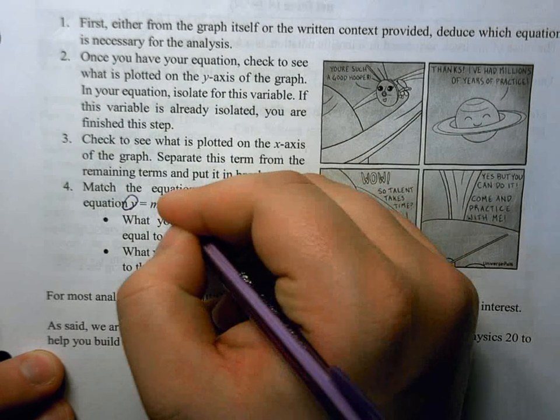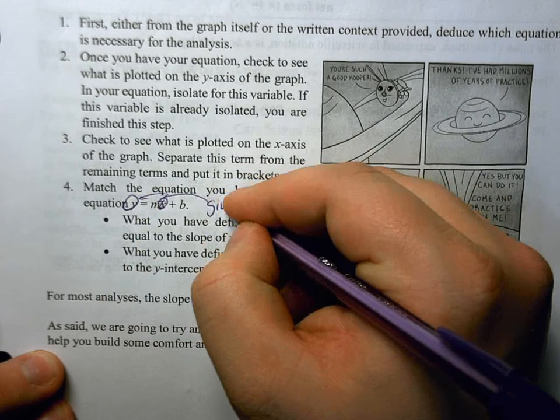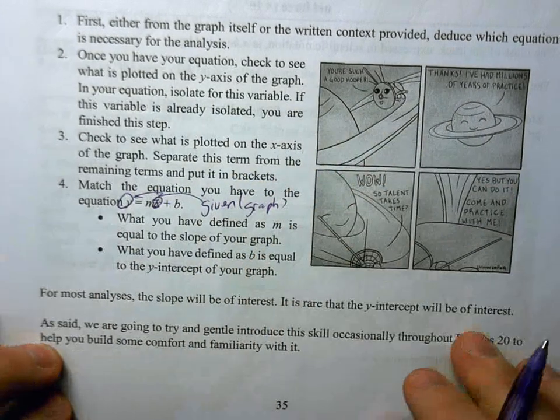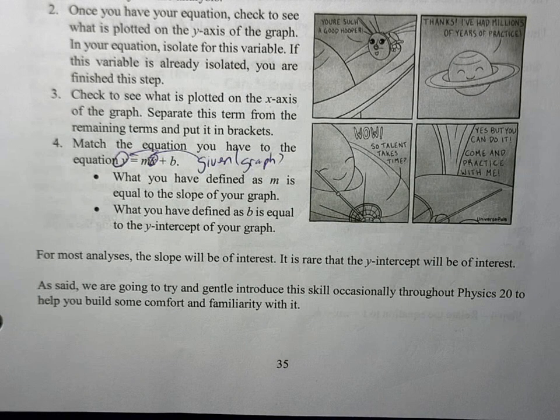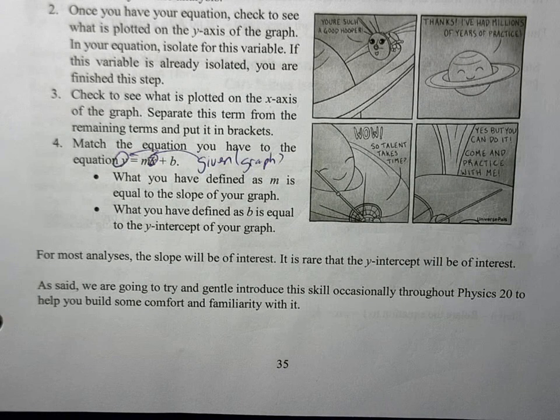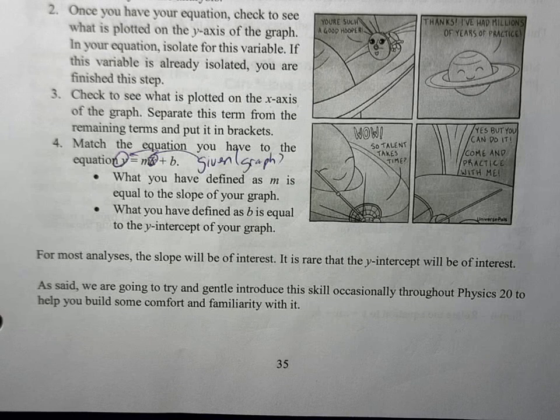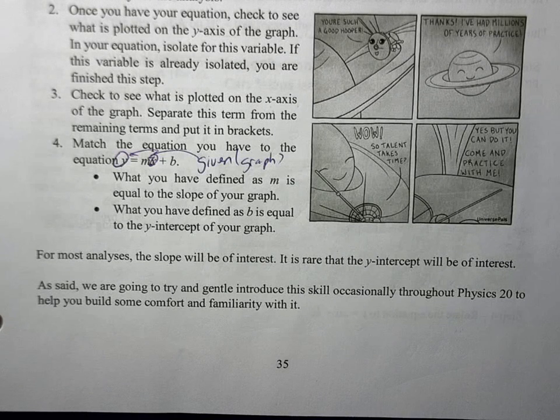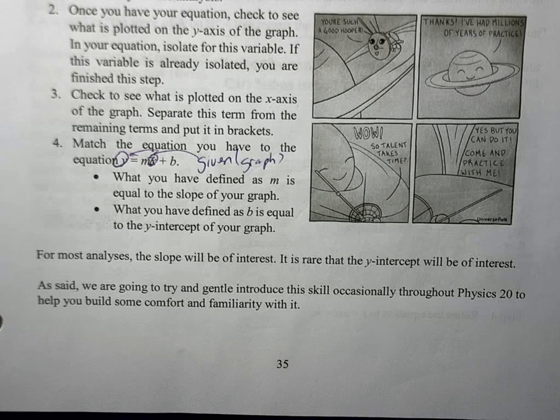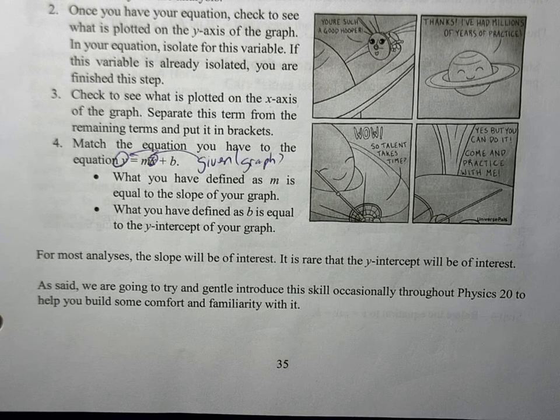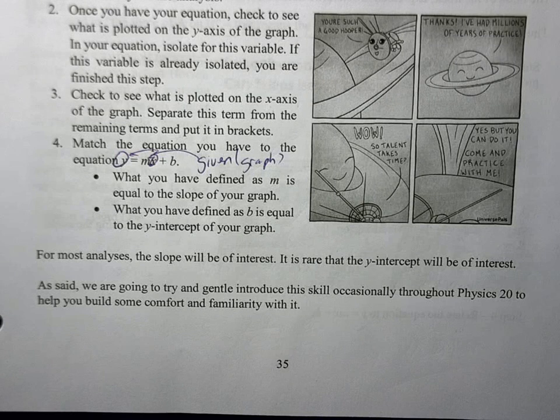Y and x are already going to be given from the graph. What you're trying to figure out is what is the slope equal to. And in some cases, you may be interested in the y-intercept. Most times in physics, about 95% of the time, it's the slope you actually care about. It's very rare the y-intercept is going to be of interest because in a lot of the equations we study, the y-intercept is theoretically zero.